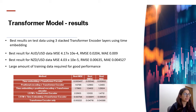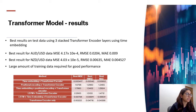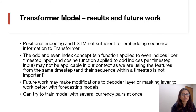The best results for AUD-USD are an MSE of 4.17×10⁻⁴, an RMSE of 0.02, and an MAE of 0.009. The best result for NZD-USD is an MSE of 4.03×10⁻⁵, which is 10 times better than the AUD-USD result, with an RMSE of 0.00635 and an MAE of 0.0045. We found that a large amount of training data is required for good performance, otherwise the model underfits. Positional encoding and LSTM do not capture the sequential information required for good forex prediction using transformer architecture.